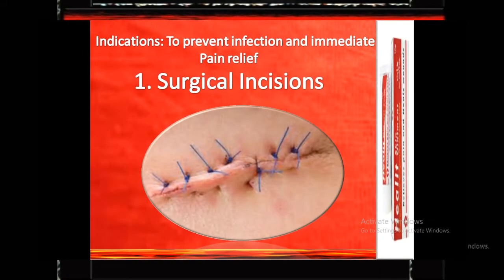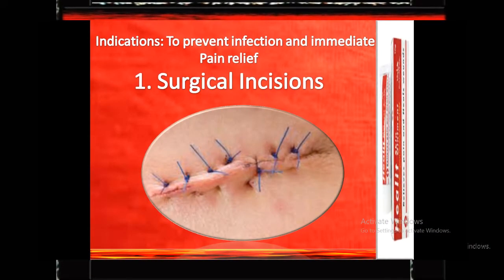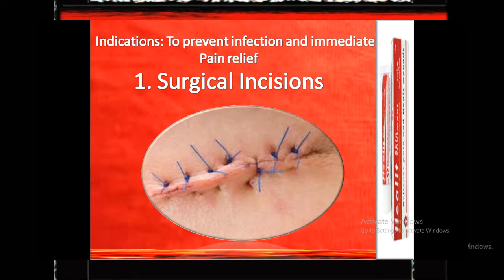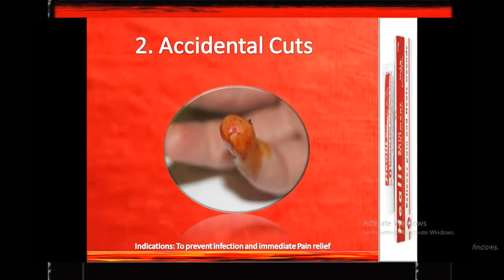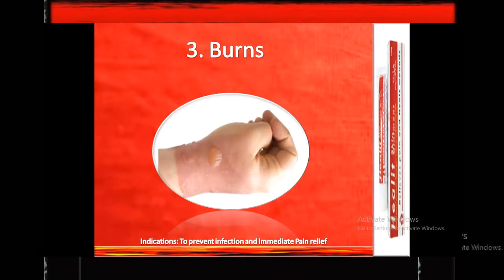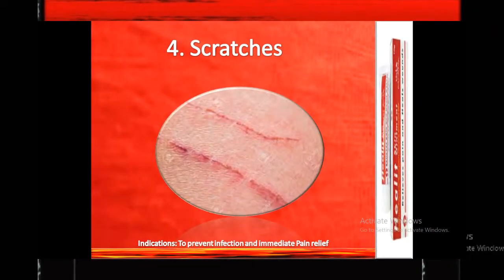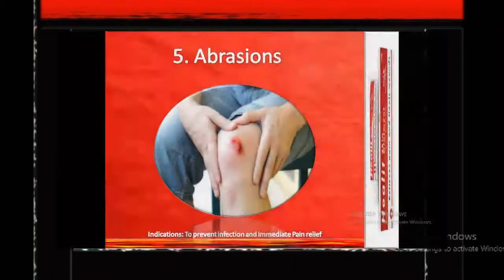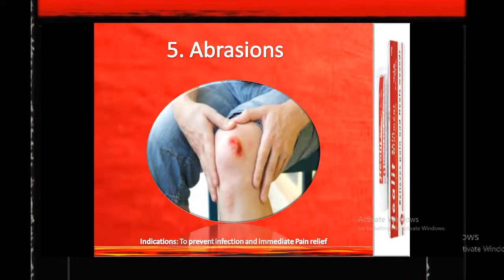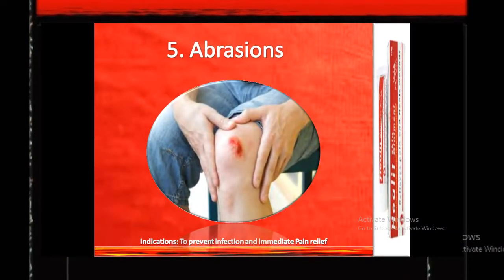A surgical incision is a cut made through the skin and soft tissues to facilitate an operation. Cuts refer to the skin wound. A burn is a type of skin or tissue injury. Scratches are damages on the skin. A skin impression is a superficial wound to the skin.